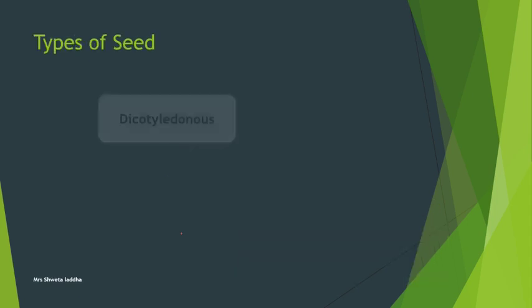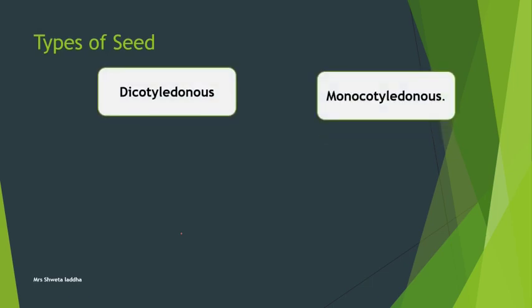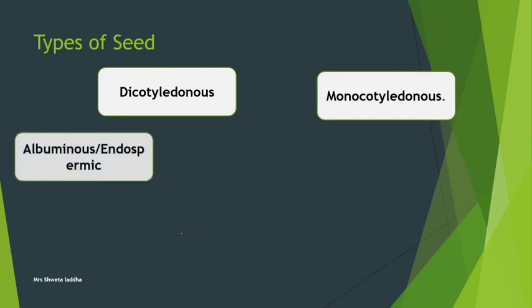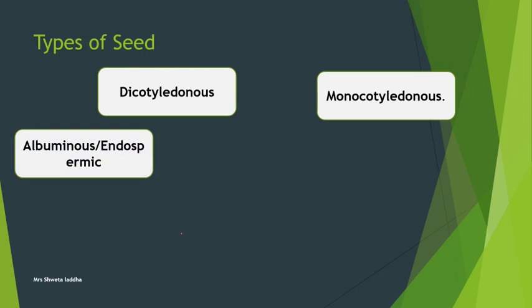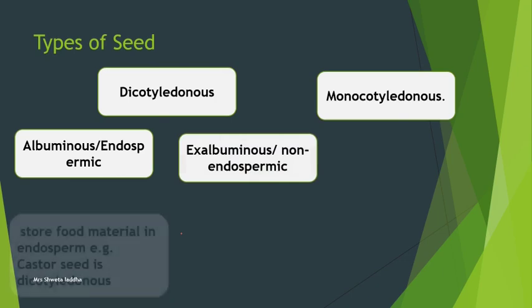Now, the types of seeds: there are two types - dicotyledonous seeds and monocotyledonous seeds. Dicot seeds have two cotyledons, while monocotyledonous seeds have a single cotyledon.